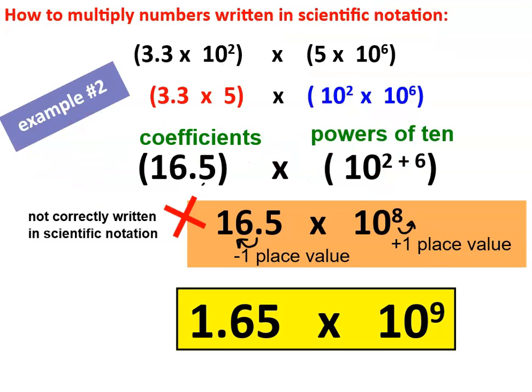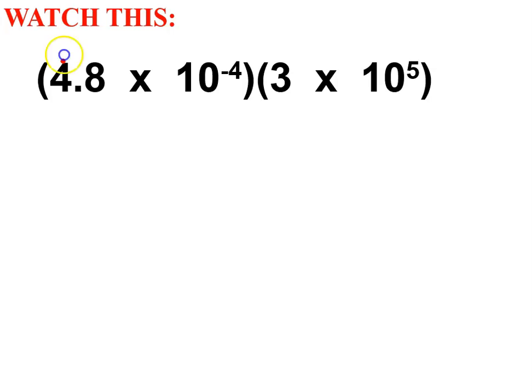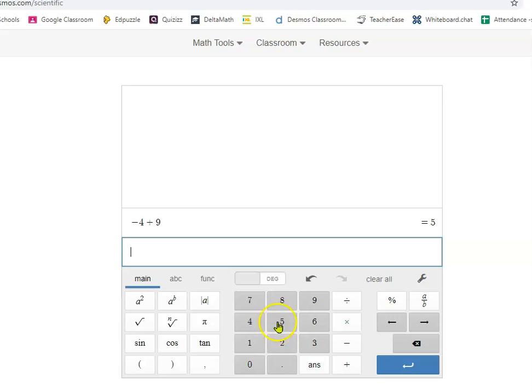Alright. Now, like you learned yesterday, sometimes a number is not written correctly in scientific notation. And when that happens, you have to change the place value and change the exponent. Let's take a look at what I mean here. For this last question, we're going to multiply 4.8 times 3. 4.8 times 3. Okay. So, my answer is 14.4. So, 14.4 is my coefficient.